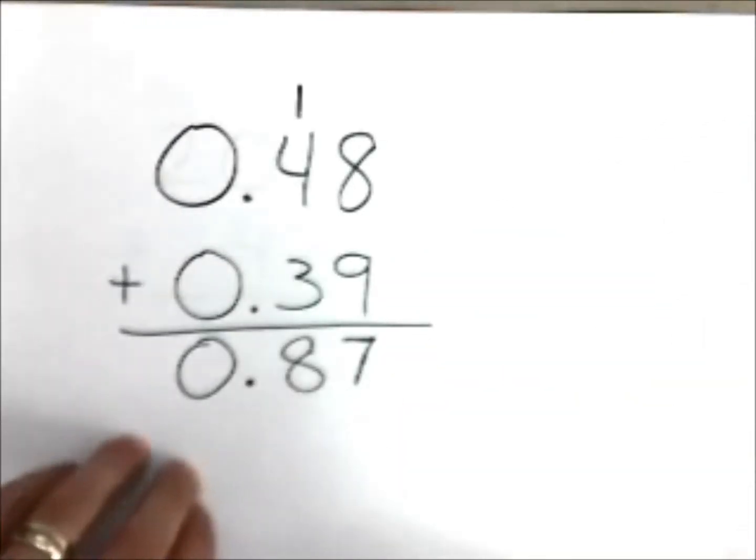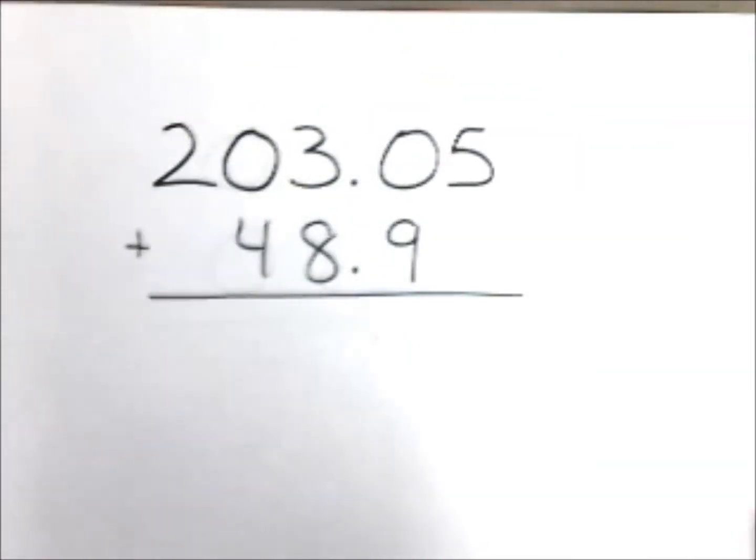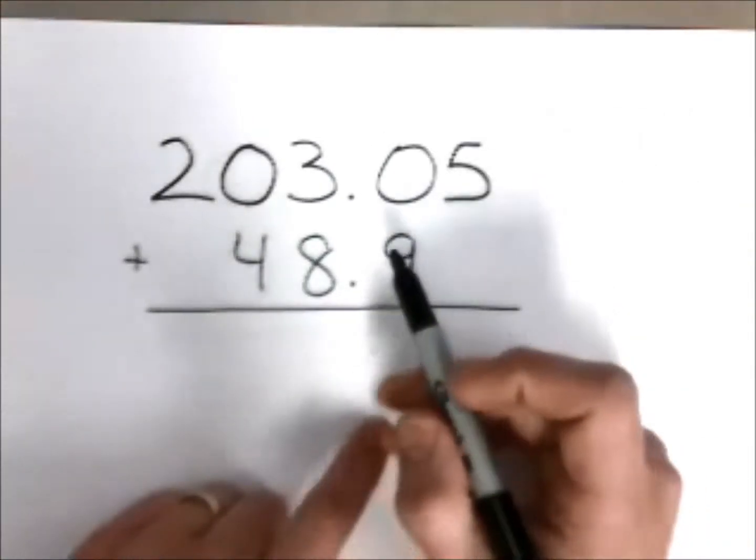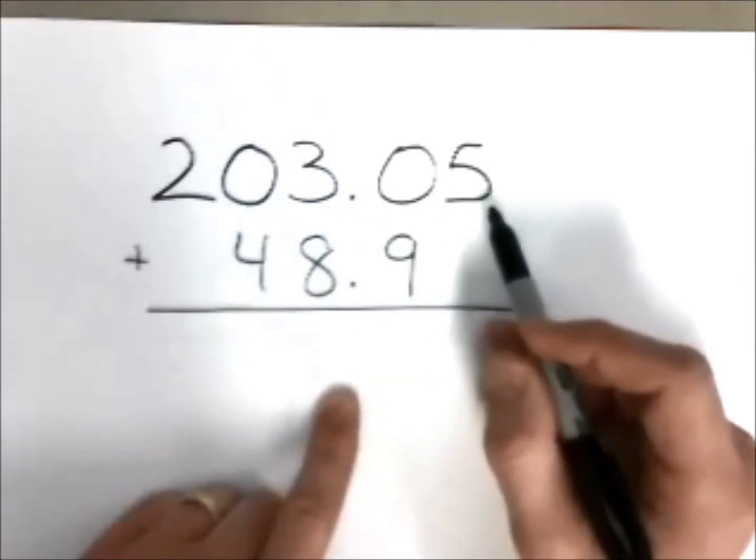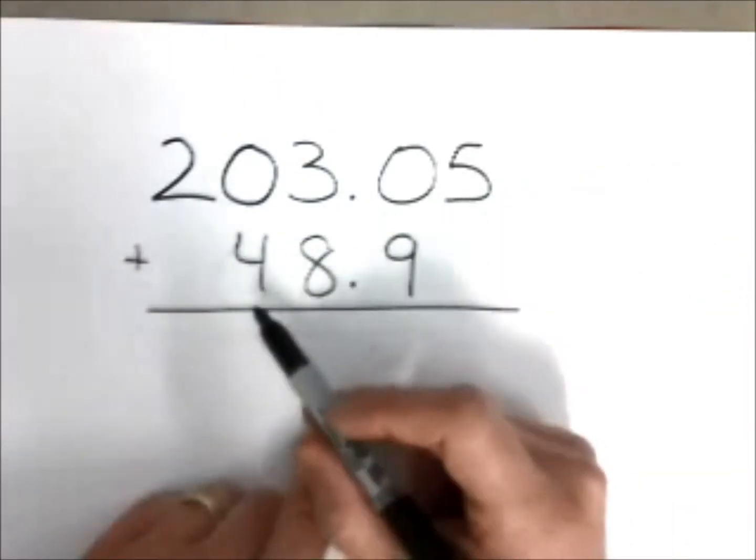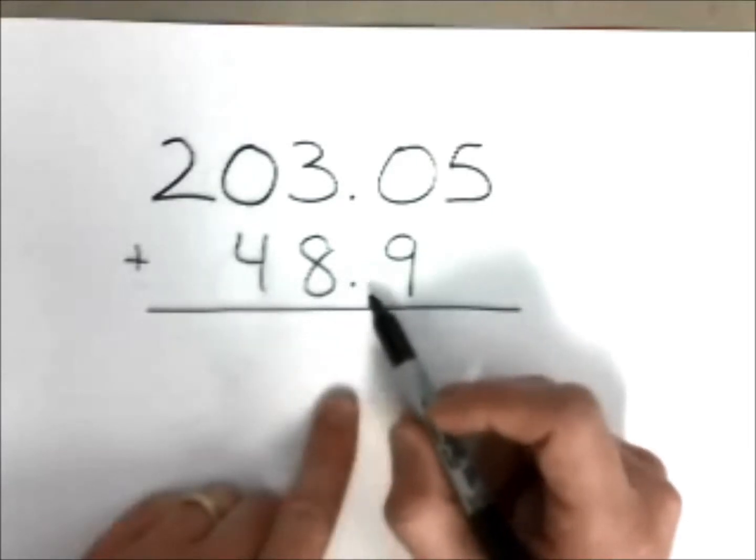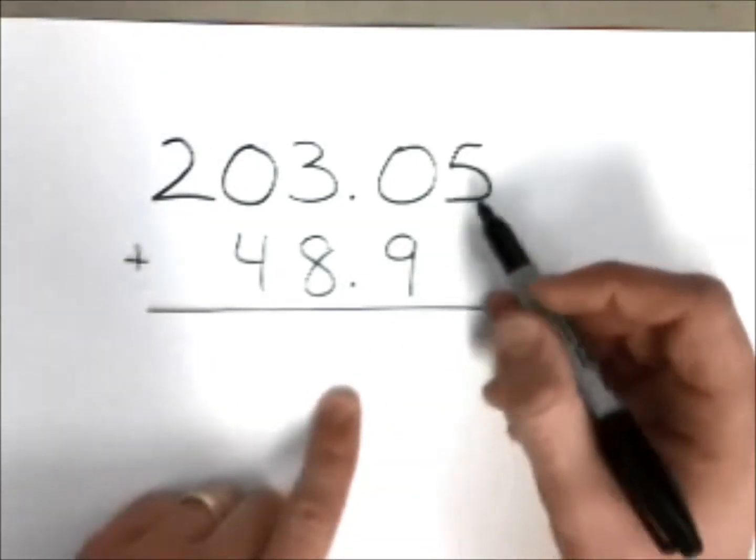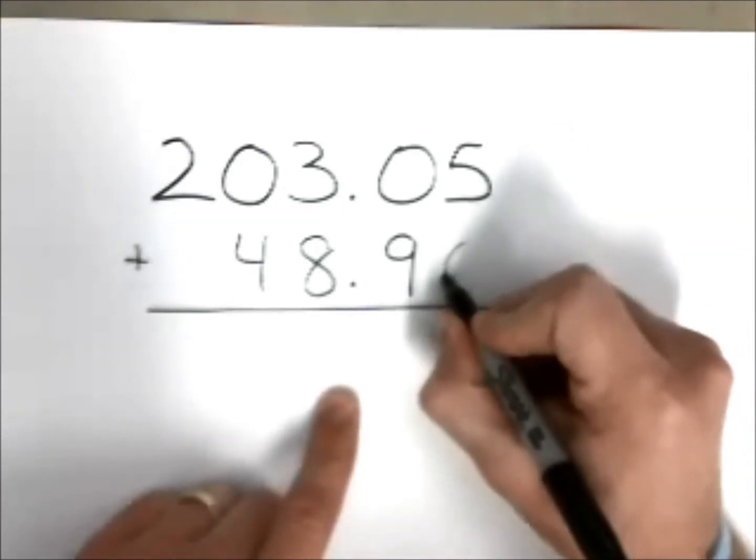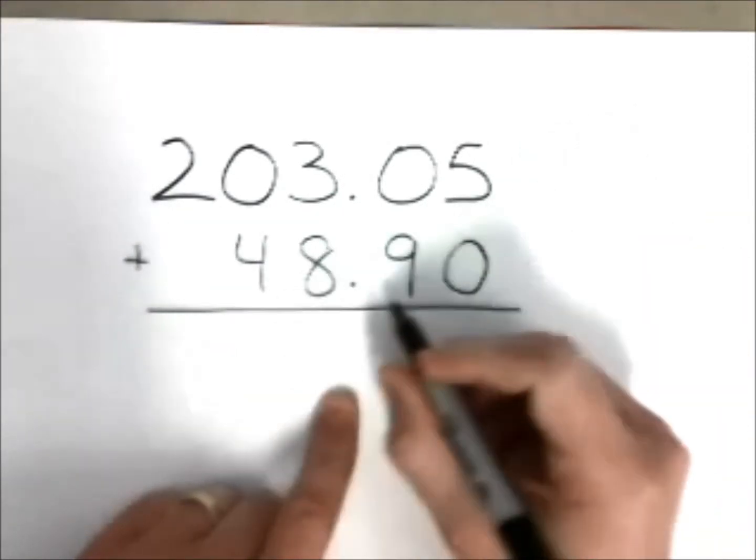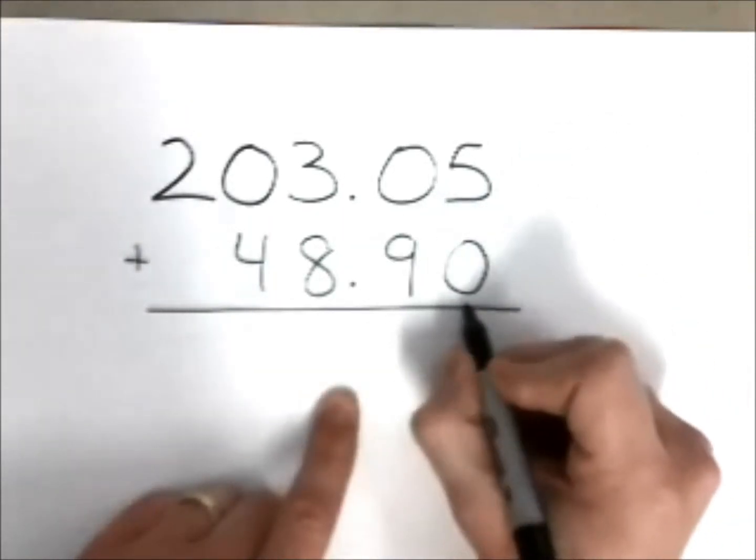Now next up we have this example, and you'll notice right away you'll say, 'Mr. Bauman, at the top you have 203 and 5 hundredths, and on the bottom you have 48 and 9 tenths.' And you'll notice that they don't line up real well. So what we need to do is put this imaginary zero here, because if there's nothing there we pretend that there's a zero.